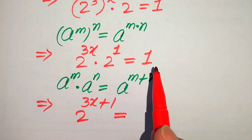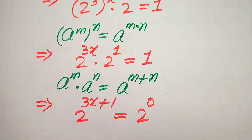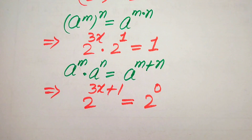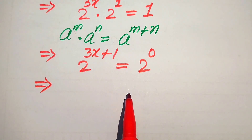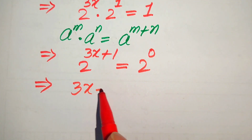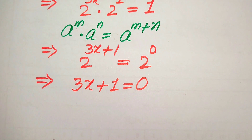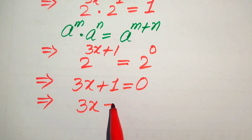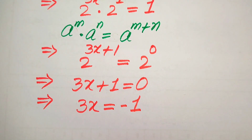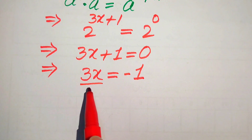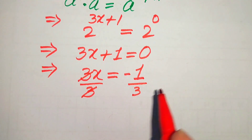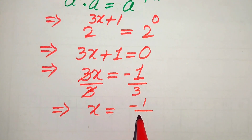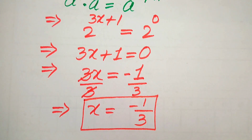We write 1 as 2 to the power of 0, since any term with an exponent of 0 always equals 1. Now we compare both sides and equate the exponents, which gives us 3x plus 1 equals 0. Moving the plus 1 to the right-hand side gives 3x equals minus 1. Dividing both sides by 3, this 3 cancels and we get the value of x equals minus 1 over 3. This is our final value of x from the first method.